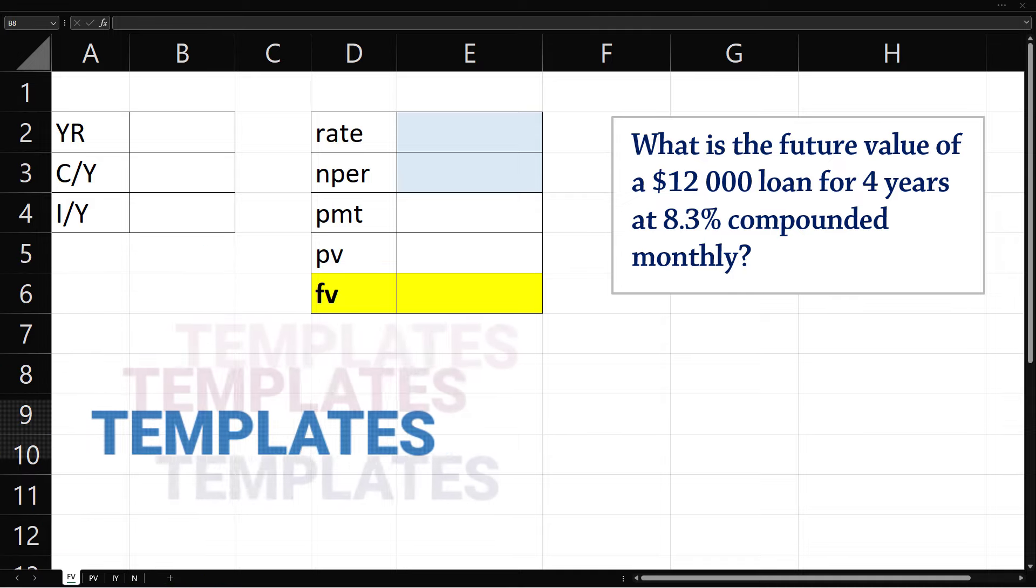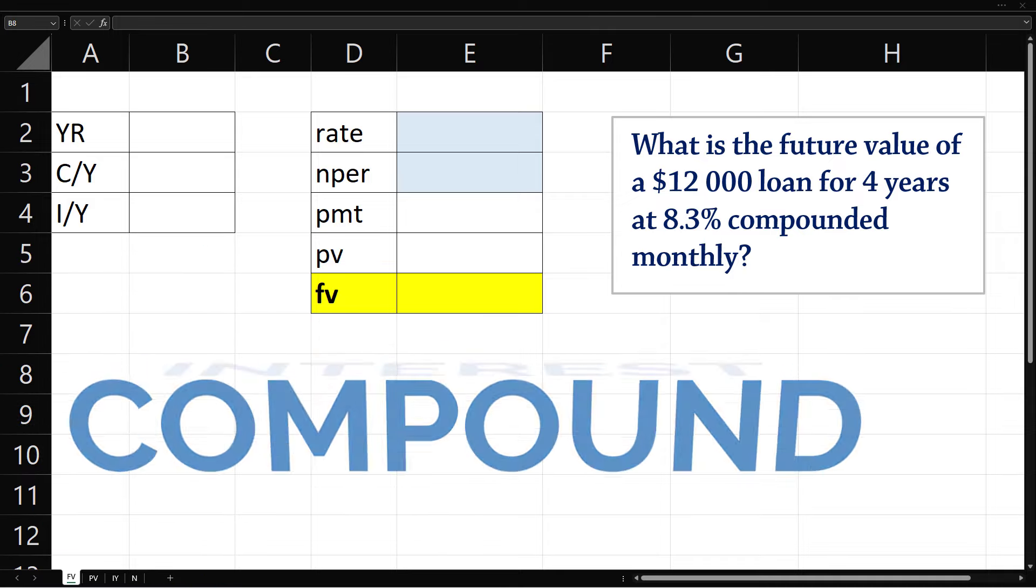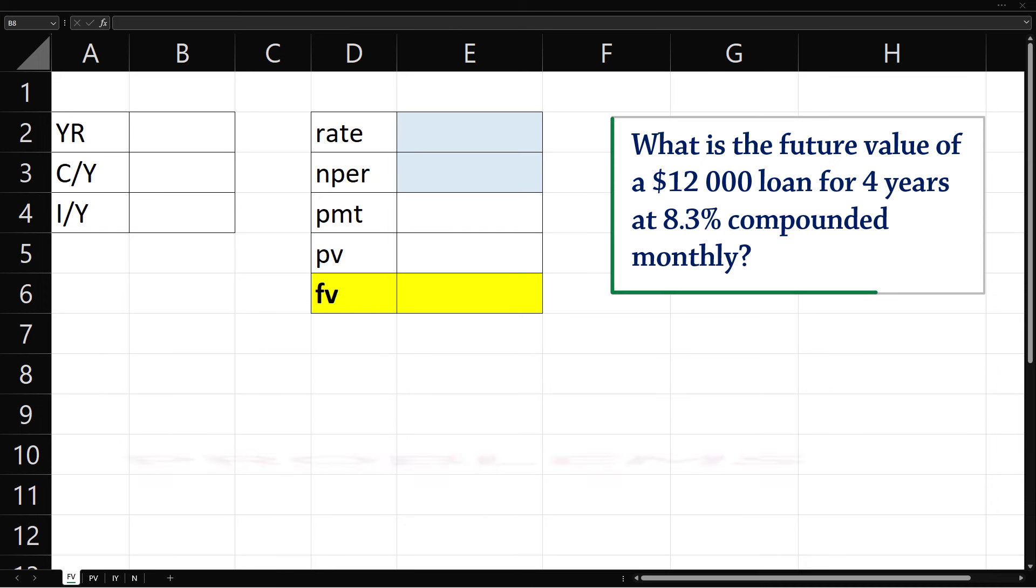Welcome. Today we set up templates and solve compound interest problems in Excel. In this first example, we compute the future value of a $12,000 loan for 4 years at 8.3% compounded monthly.